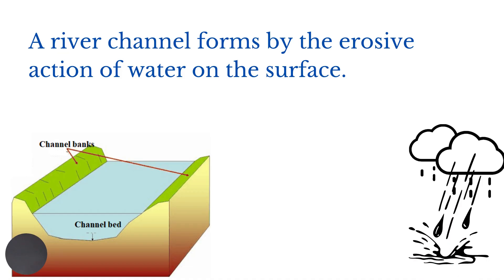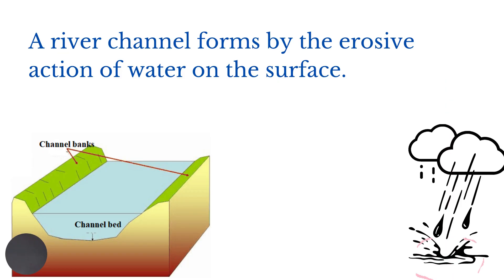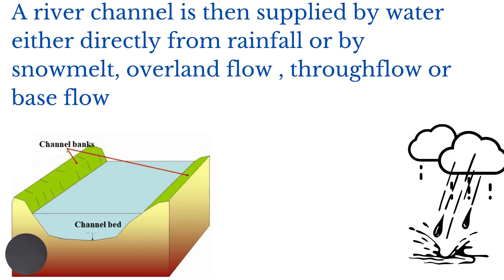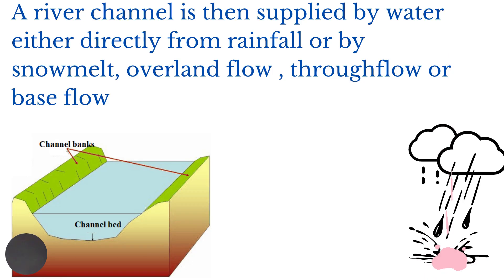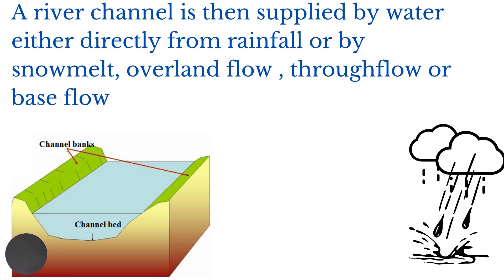As the diagram shows, the river channel is made up of two sides called banks, as well as a bed. A river channel is supplied with water either directly from rainfall or by snowmelt or overland flow.